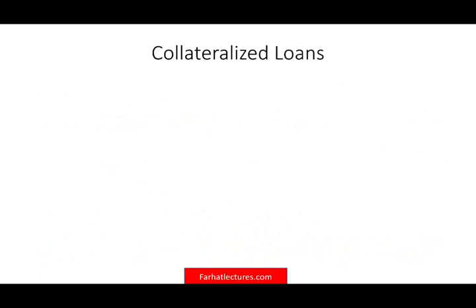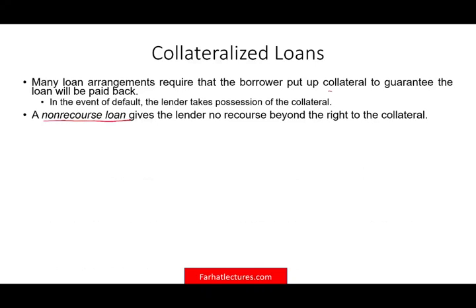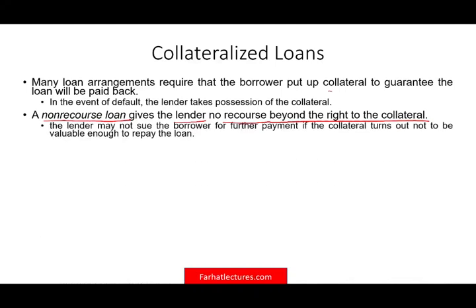Collateralized loans: many loan agreements require the borrower to put up collateral to guarantee the loan will be paid back. In the event of default, the lender takes possession of the collateral. If we have a non-recourse loan, it gives the lender no recourse beyond the right to the collateral — all the borrower would lose is whatever they put up. Under those circumstances, the lender may not sue the borrower for further payment if the collateral turns out not to be valuable enough to repay the loan. The lender must be very careful with non-recourse loans since that particular asset is all they can pursue.